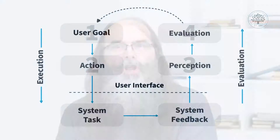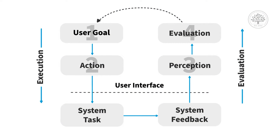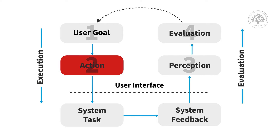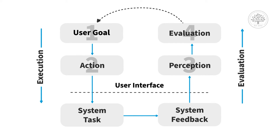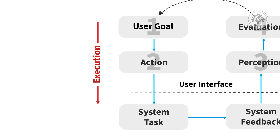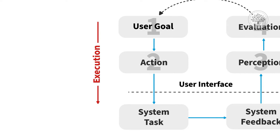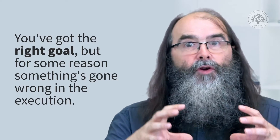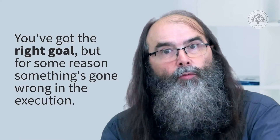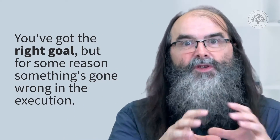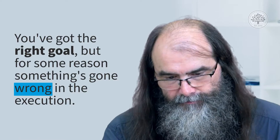That's a slip, and because it happens at that very low level of the last action, it's quite easy not to notice you've done it at all. This is an error in the execution part of the execution evaluation cycle — you've got the right goal but something's gone wrong in the execution.